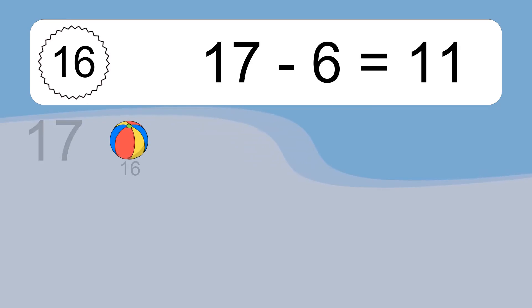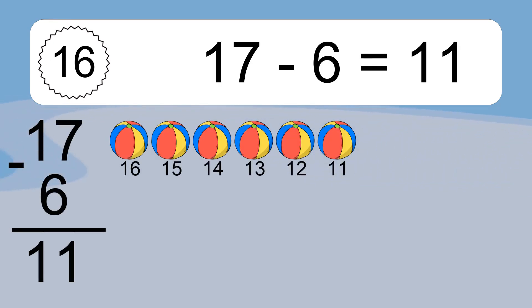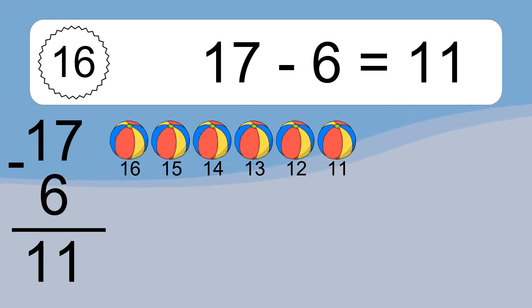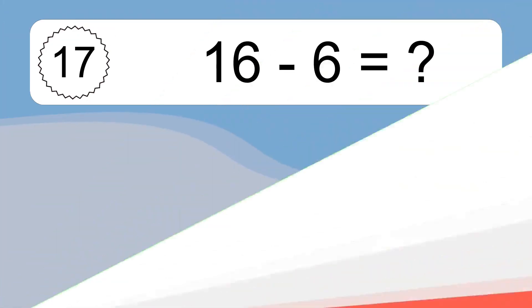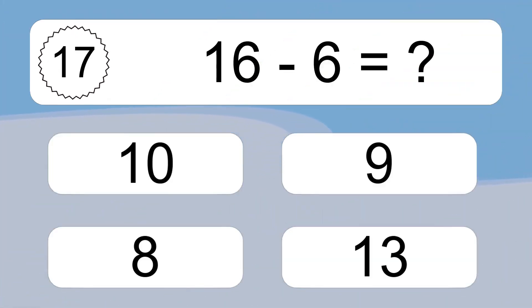17 minus 6 equals what? 17 minus 6 equals 11. Let's count it. 16, 15, 14, 13, 12, 11.